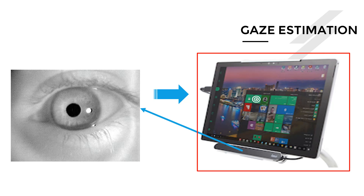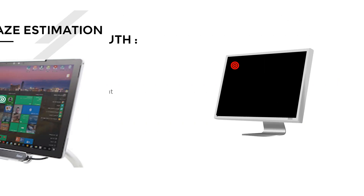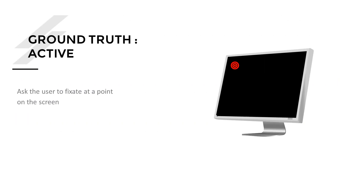Now the question is how do we collect ground truth? Before we can formulate algorithms, we need to know what is the gaze of the person. This is done using two different methods. The first is called the active method: the person is asked to fixate on a particular location on the screen, and because we know that location — perhaps shown via animation — we have ground truth. We know the eye image when it is looking at that location, and we can create many such points.